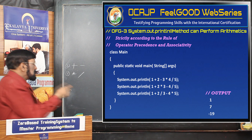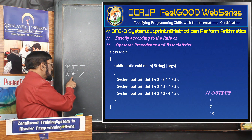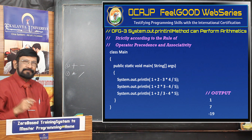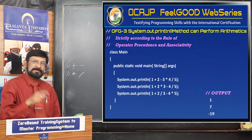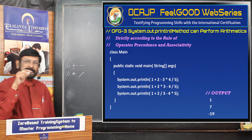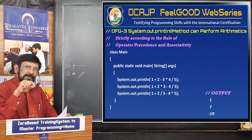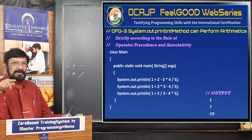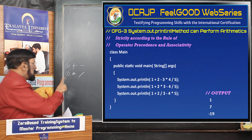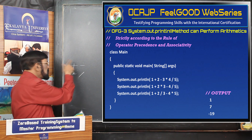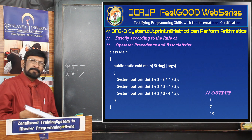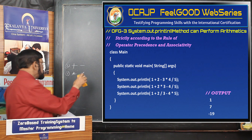Associativity is also there. Suppose in an expression multiplication and division both are there — which is executed first? In order of occurrence: if multiplication is written first, multiplication is executed first; if division is written first, division is executed first. After these are done, then the lower-precedence operations are executed. These basic rules you must know.